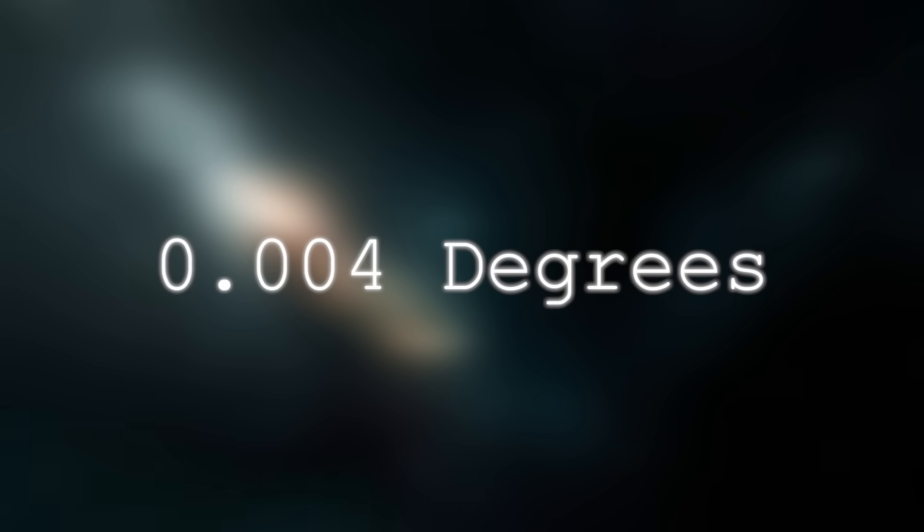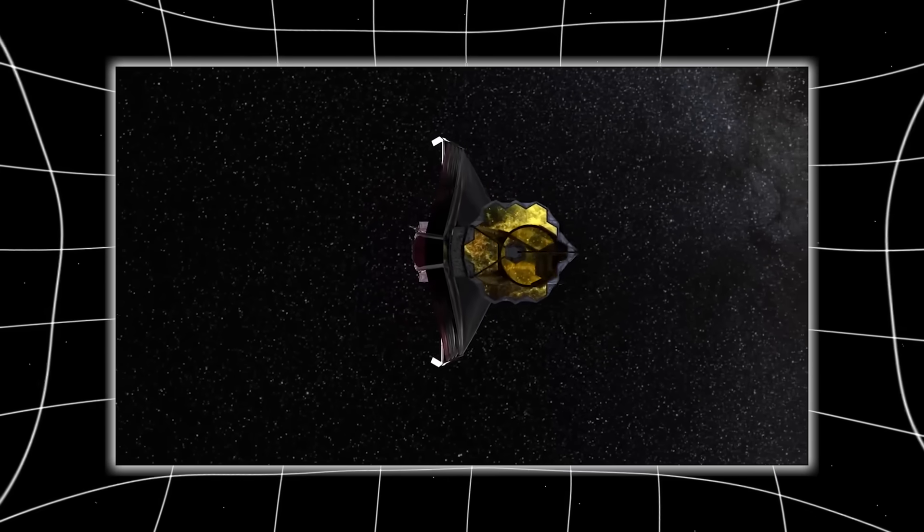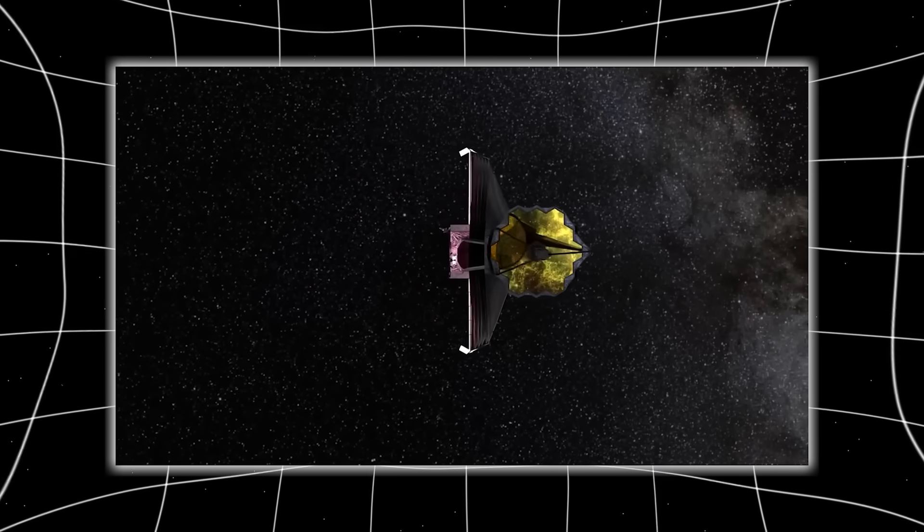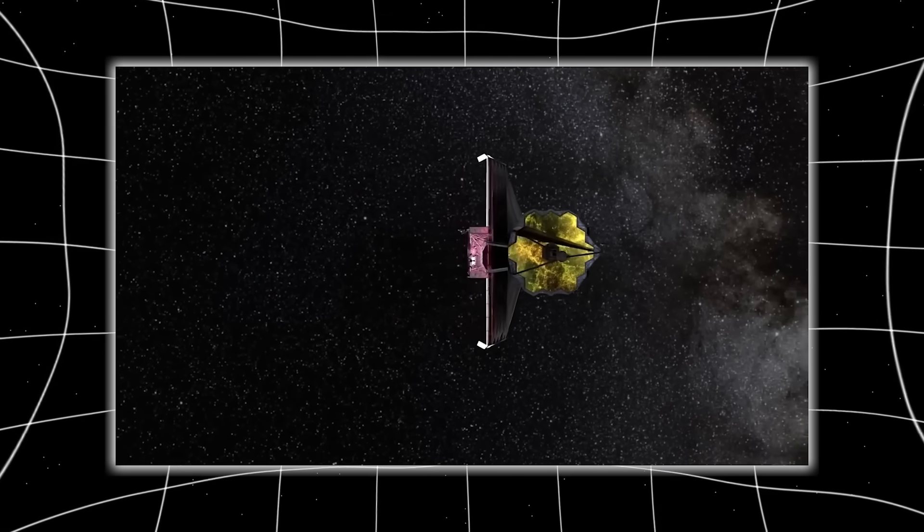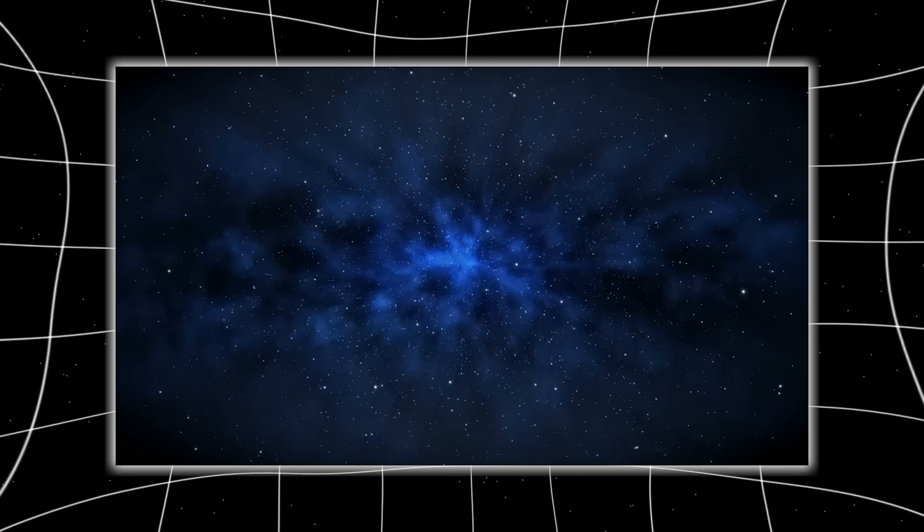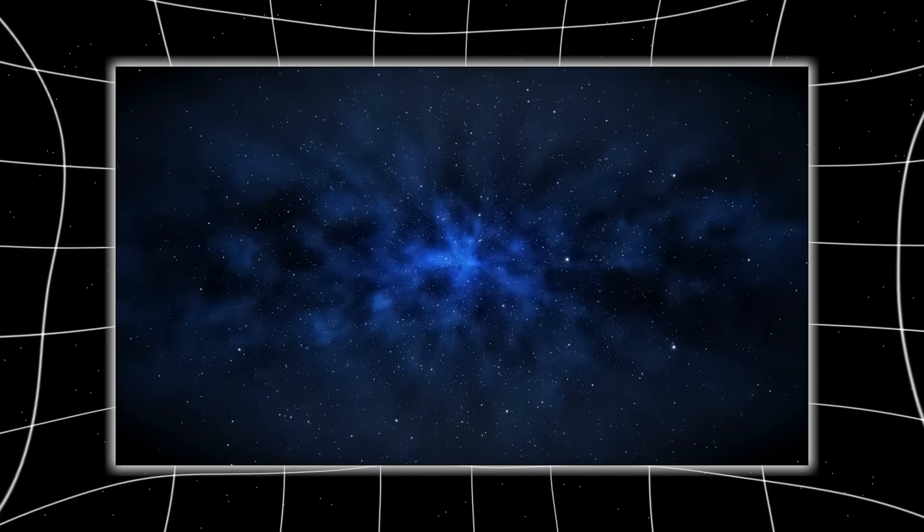It reappeared just 0.004 degrees off from its original position, an imperceptible fraction to the human eye, but catastrophic to the calculations of scientists. Because if something can displace itself without leaving a trail, it means it's not bound by the speed of light. It means it's not bound by time.